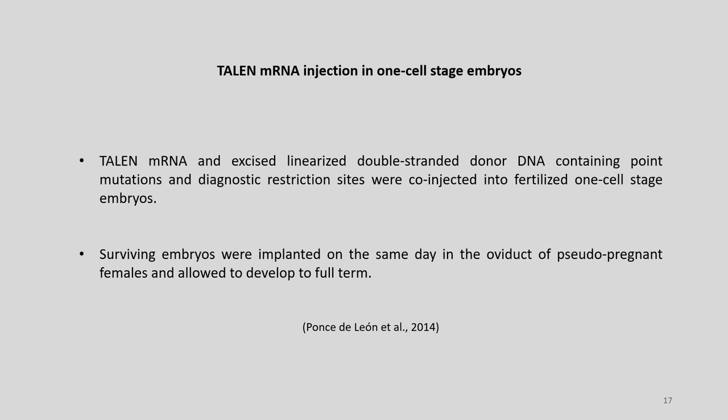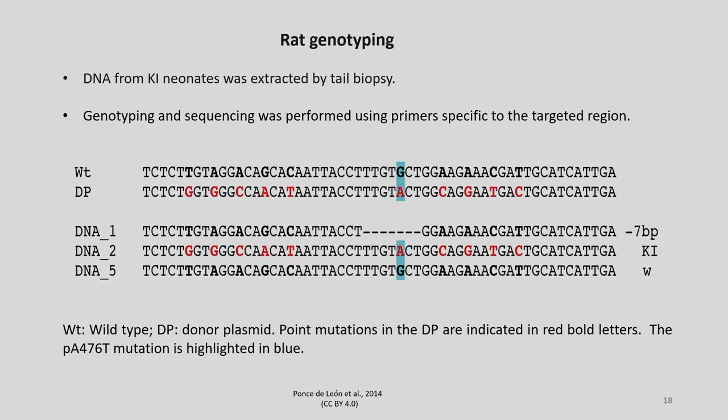TALEN mRNA and an excised linearized double-stranded donor DNA containing point mutations and diagnostic restriction sites were co-injected into fertilized one-cell stage embryos. Surviving embryos were implanted the same day into the oviduct of pseudo-pregnant females and allowed to develop to full term. DNA from knockin pups was extracted by tail biopsy; genotyping and sequencing were performed using primers specific to the targeted region, confirming the PA476T mutation in the progeny.